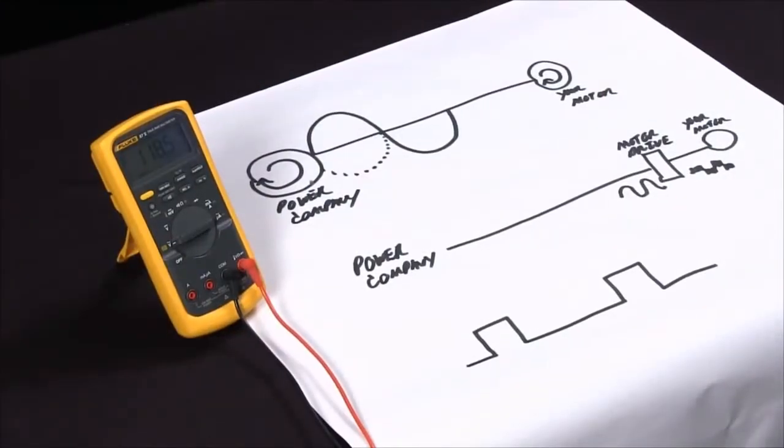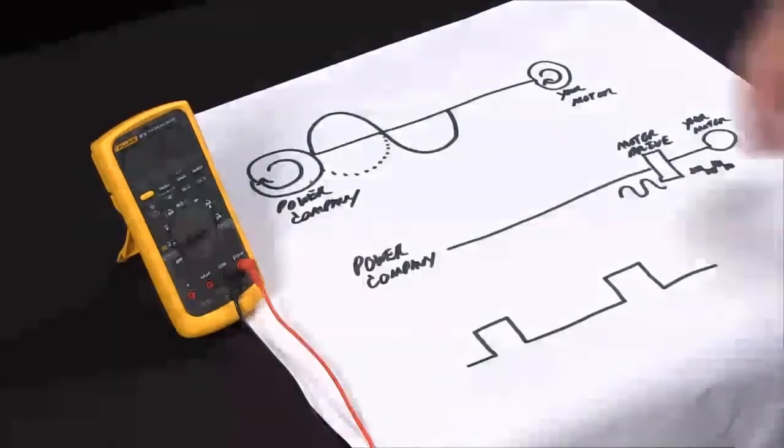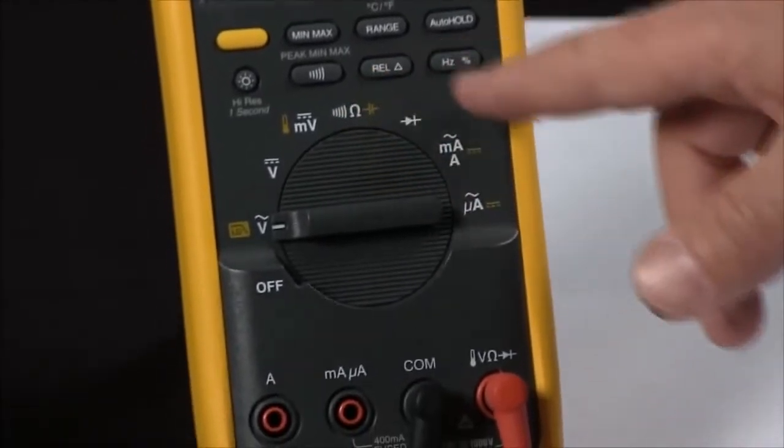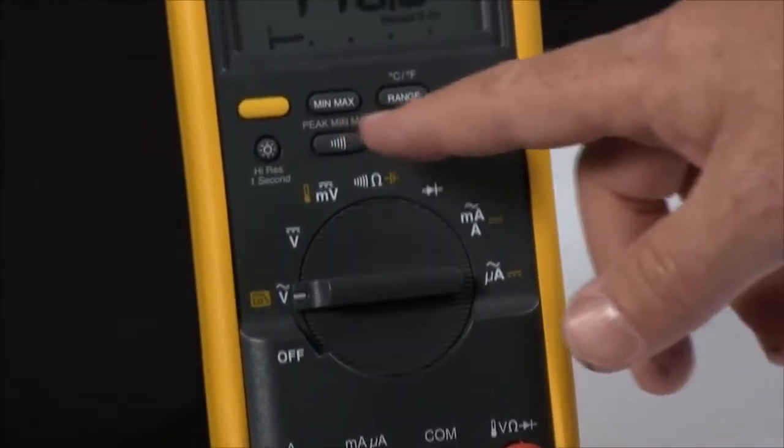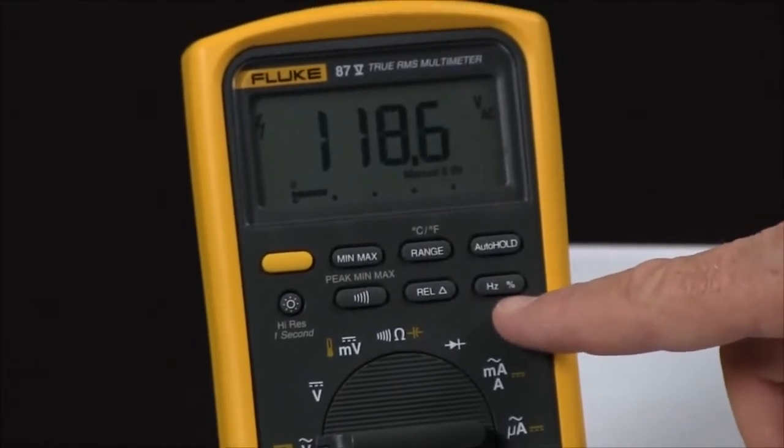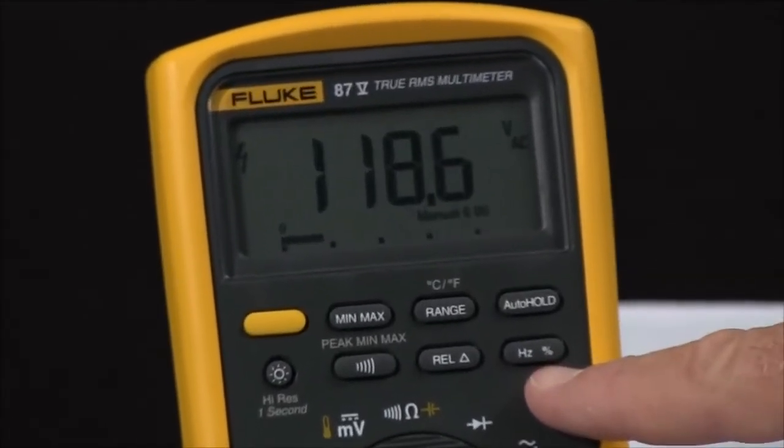Fluke multimeters include a lot of advanced measurement capabilities that can enhance your troubleshooting style. On the Fluke 87.5, in addition to your standard measurements, we also have some more advanced measurements up along the top here. The one we're going to be discussing now is the frequency and duty cycle.